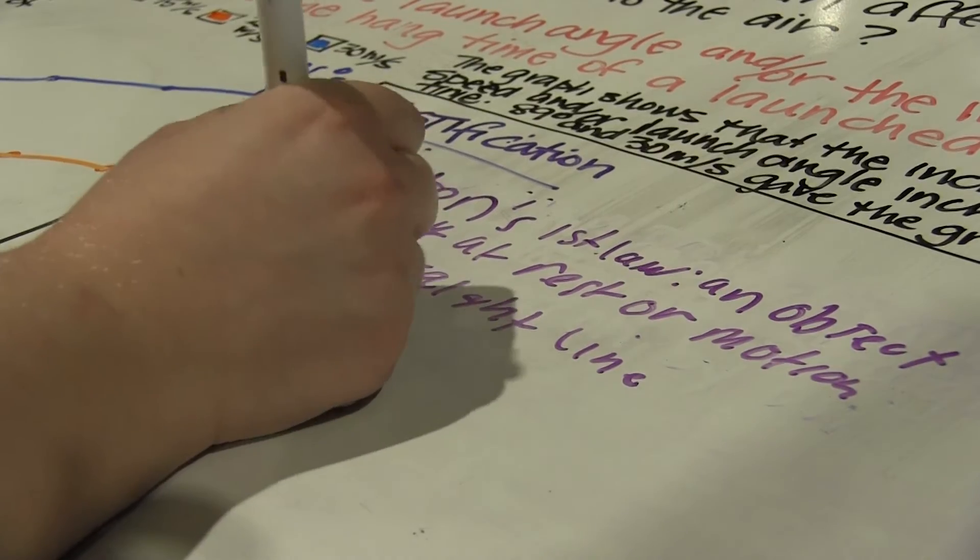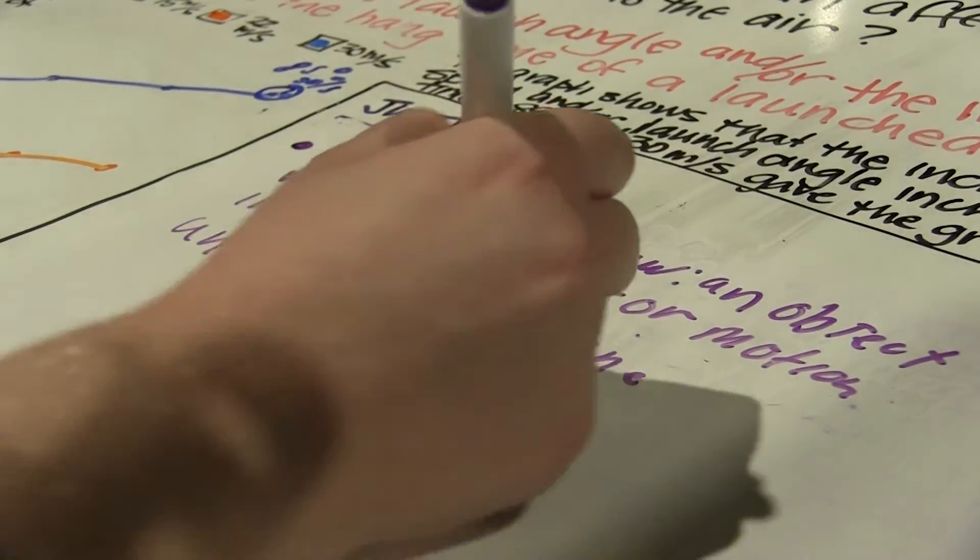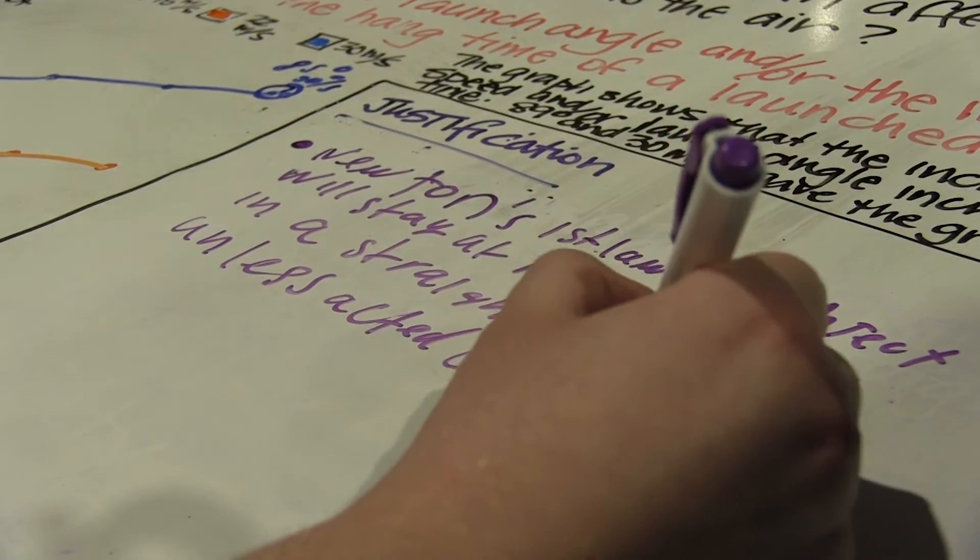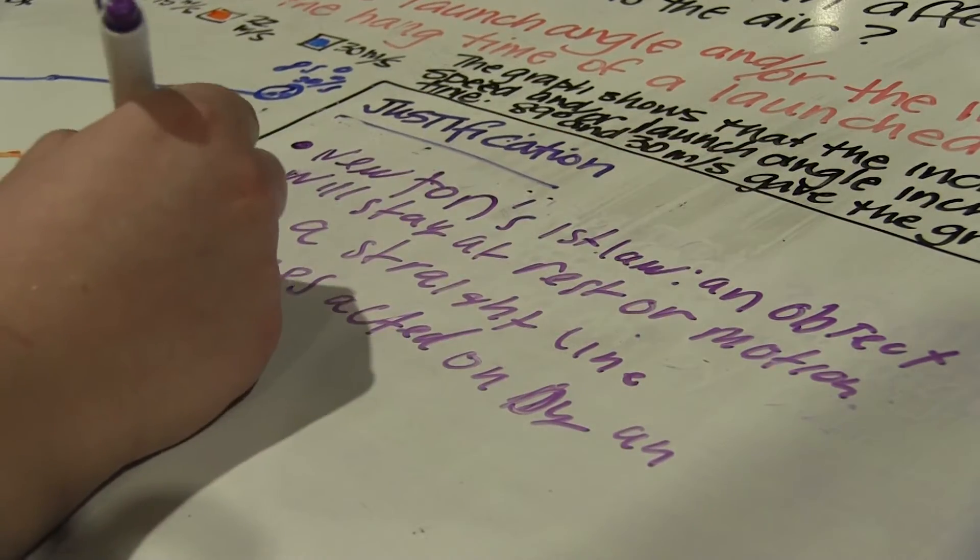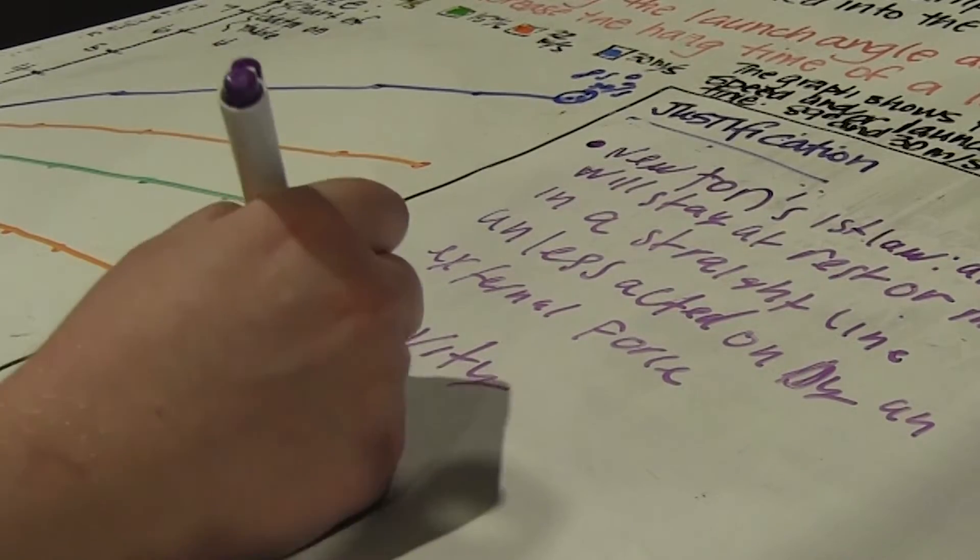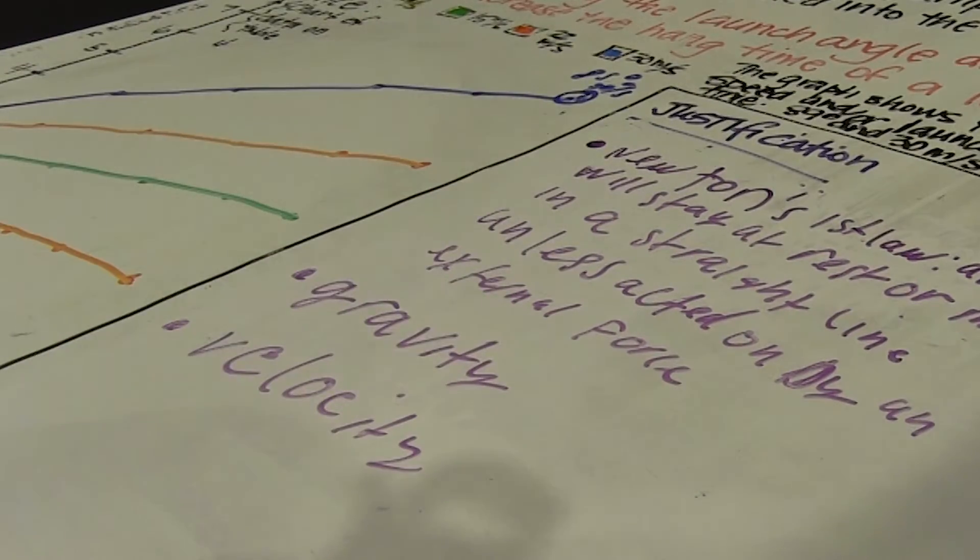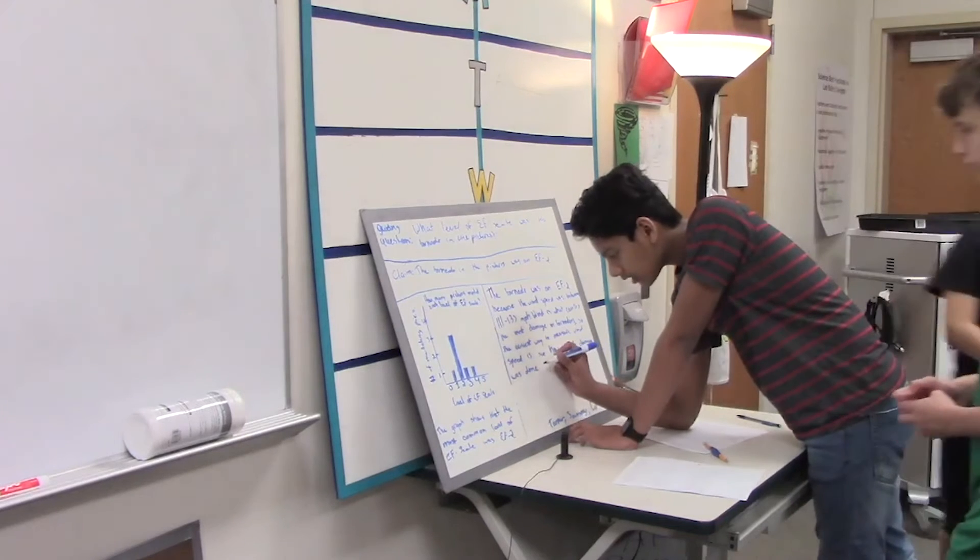While some people might think we're being just a little picky with our naming conventions, let's take a look at the justification for this physics investigation. The concept of Newton's first law combined with the assumptions of gravity and velocity are some of those overarching scientific concepts that make it more worthwhile to analyze the data we collected. This is the goal of justification.